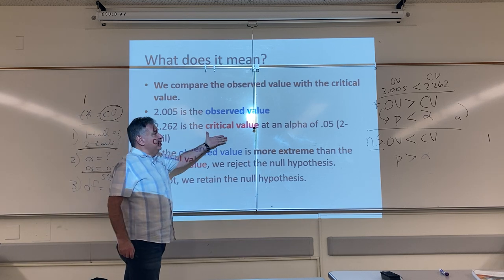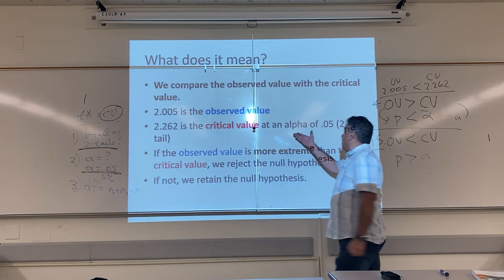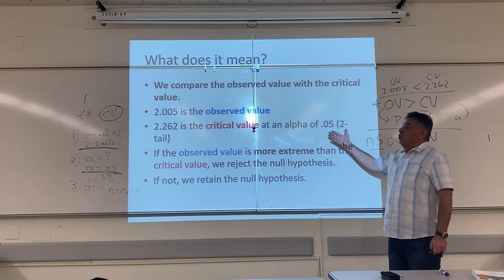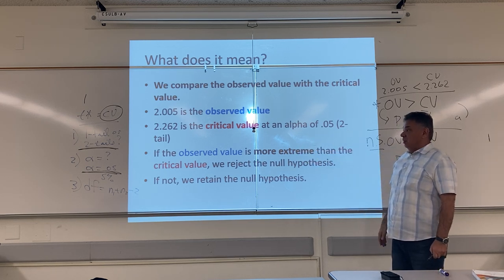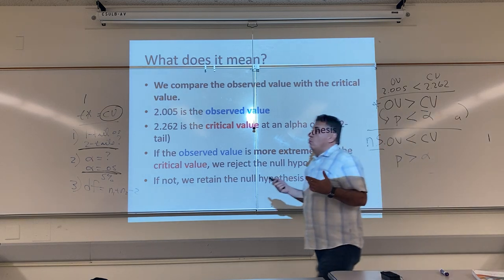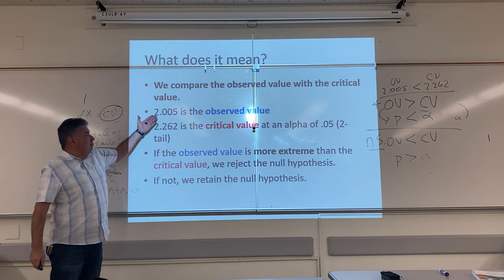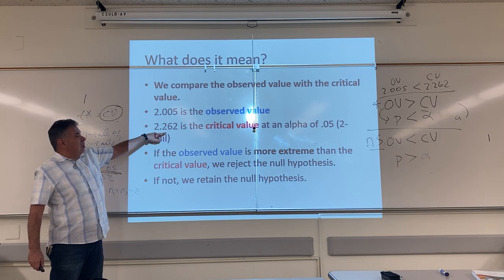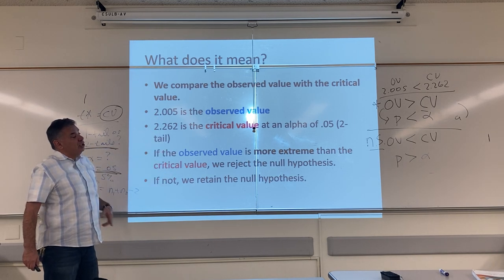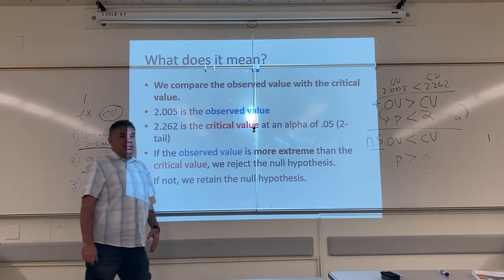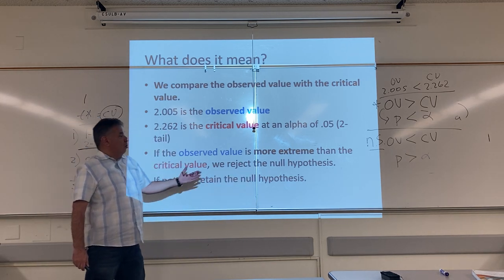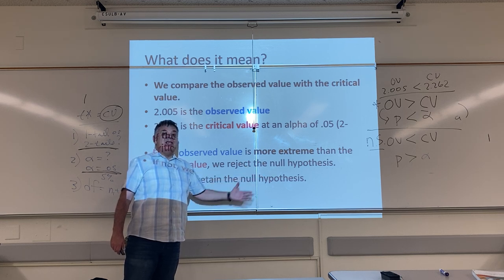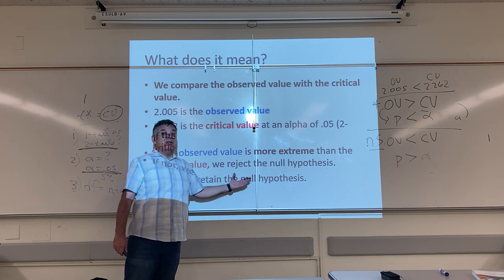How did we find this critical value? We used an alpha of 5% when we did a two-tail test with nine degrees of freedom. We have to make a decision. If my answer, the observed value, is more extreme than the critical value, what's your decision? We're going to reject the null hypothesis. We're going to stop believing that there's no difference and believe the other idea, that there is a difference.